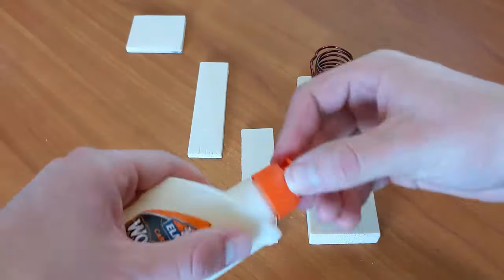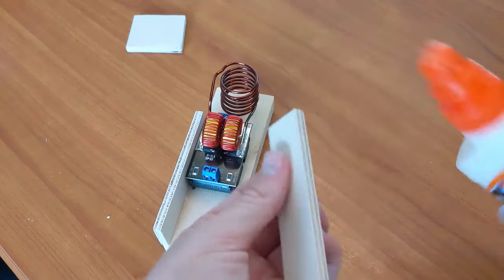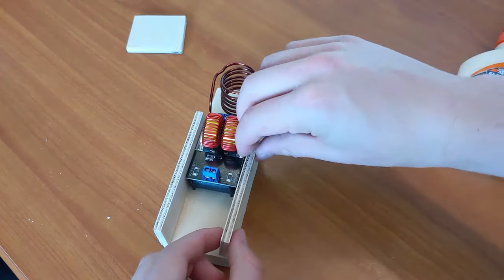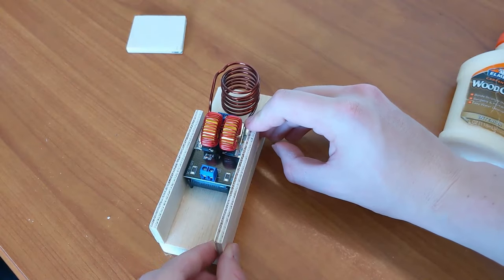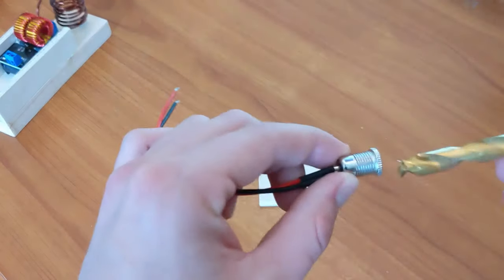When you're using the module, it does tend to get hot, so you do want to let it breathe a little bit. You don't want to completely enclose it. So I added two wood sides and then one top piece of wood. Before I can glue that on though, I need to make a hole for the female jack.